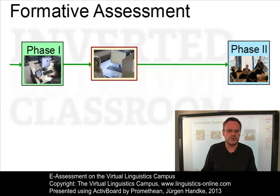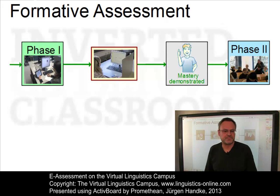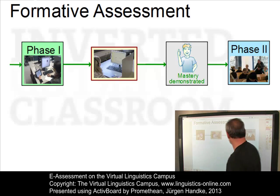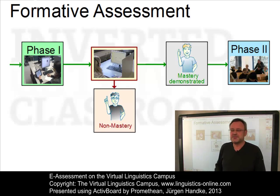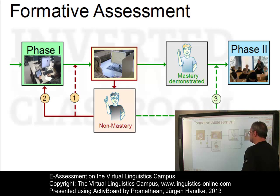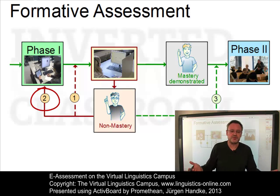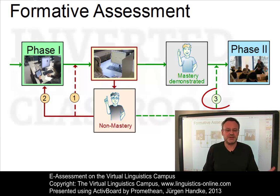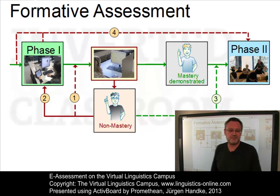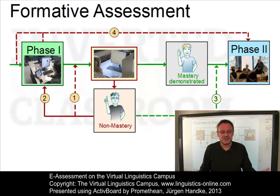With formative assessments, students can demonstrate mastery. If they do, they can be considered well-prepared for the subsequent in-class phase. If they can't demonstrate mastery, they have several options: they can repeat the assessment until they pass it, go back to the phase of content delivery as often as they like and then retake the test, or simply attend the subsequent in-class meeting without having demonstrated mastery. For some students, this may even be a standard option — they do not want to show mastery via additional assessment, or in an even worse case, they attend the in-class meeting totally unprepared. However, students will quickly realize that without preparation, it doesn't make sense to join their fellow students in class.